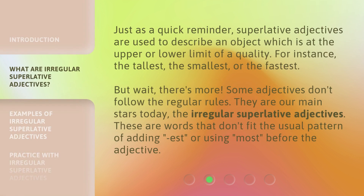Just as a quick reminder, superlative adjectives are used to describe an object which is at the upper or lower limit of a quality. For instance, the tallest, the smallest, or the fastest. But wait, there's more. Some adjectives don't follow the regular rules. They are our main stars today — the irregular superlative adjectives. These are words that don't fit the usual pattern of adding 'est' or using 'most' before the adjective.